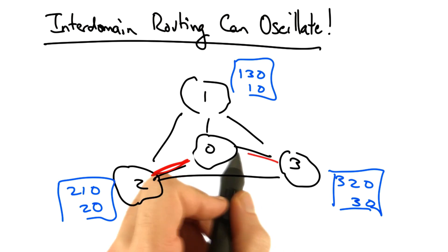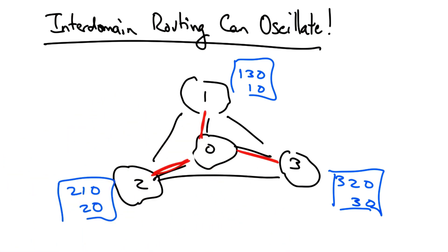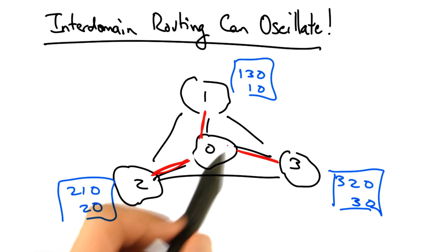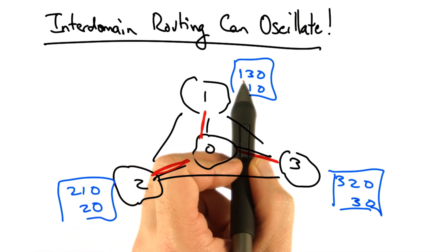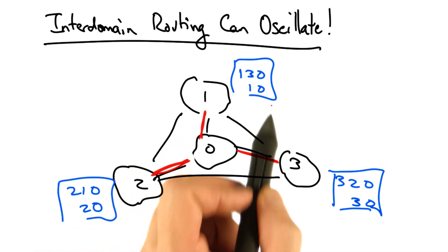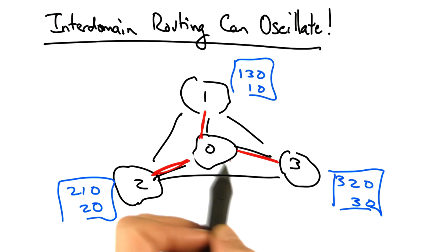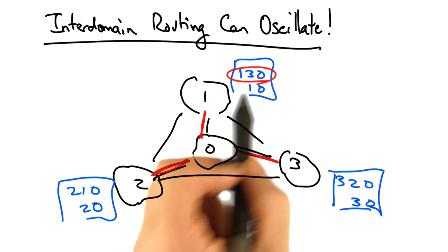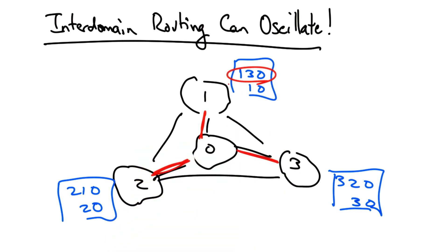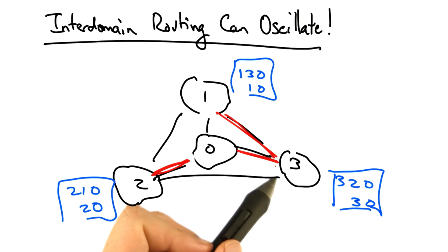Now it's pretty easy to see that there's no stable solution. Let's suppose that we started off with everybody selecting the direct path. In this case, any one of these ASs would notice that it has a more preferred path. So for example, AS1 would see that because AS3 has picked the direct path, then in fact it could prefer path 130. Now we enter into a situation where oscillations can occur indefinitely.